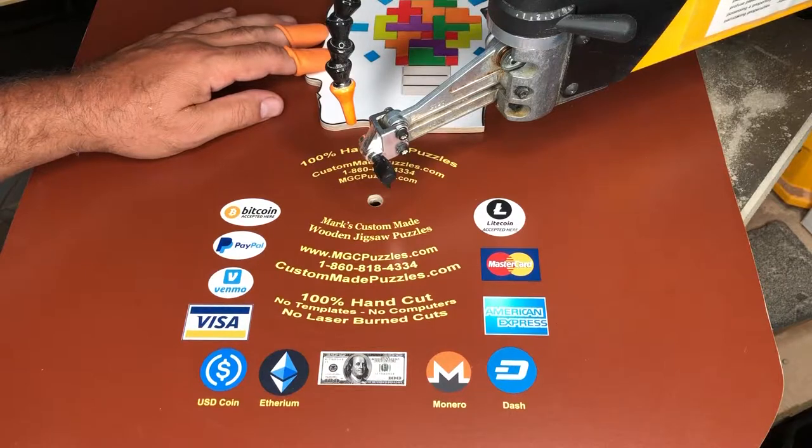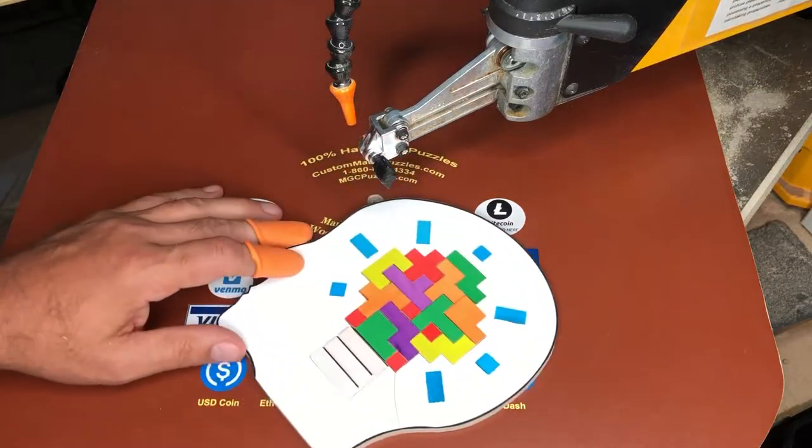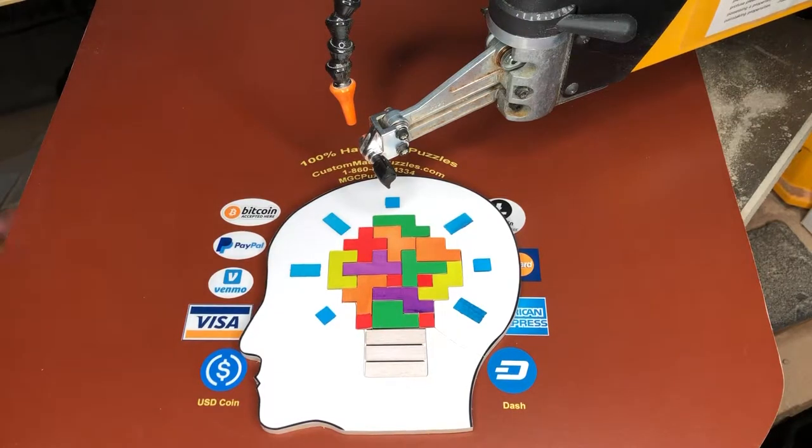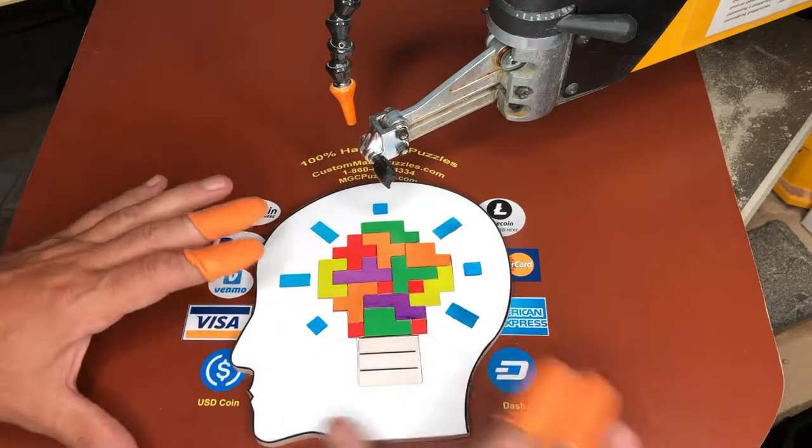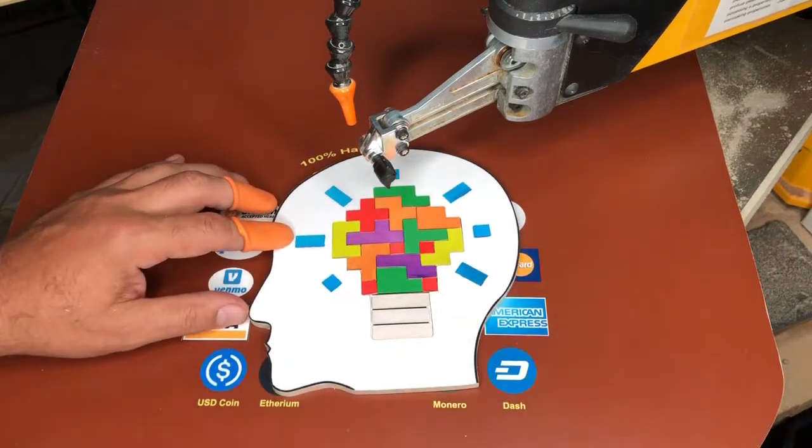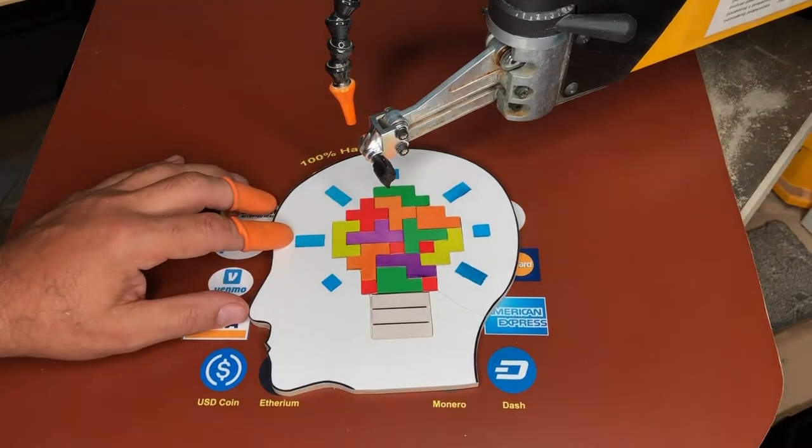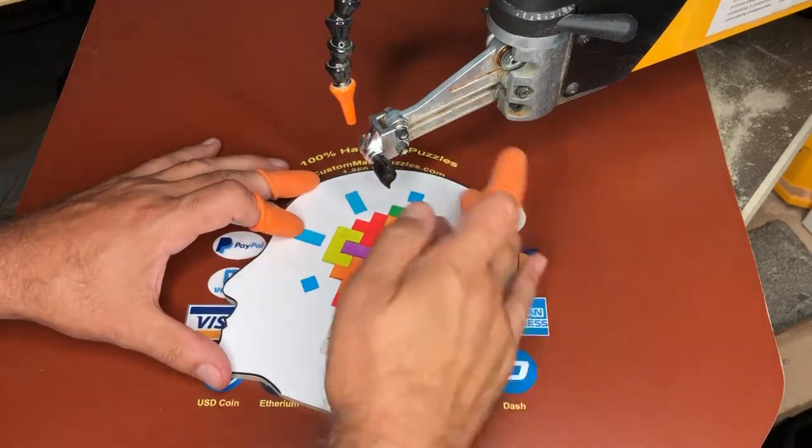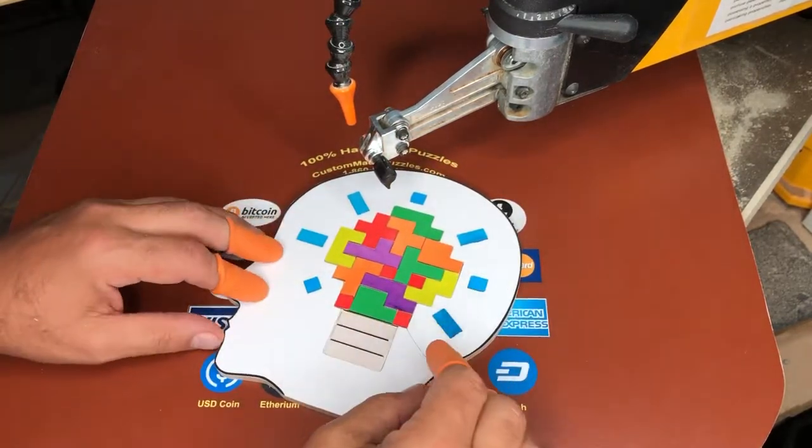I just wanted to show you the quick end result. I basically had to make this outline of a human head, and let's see if I get the white balance to settle down. There we go. The customer's logo is this tangram lightbulb that's in the puzzle.